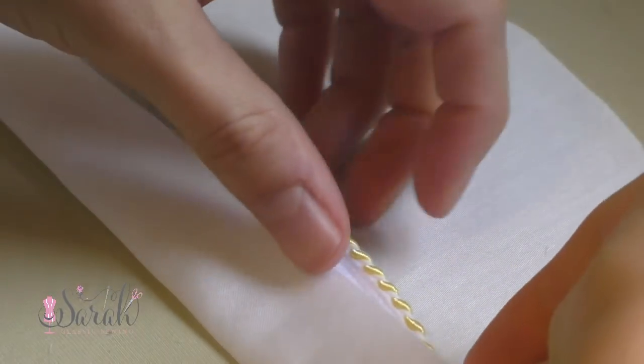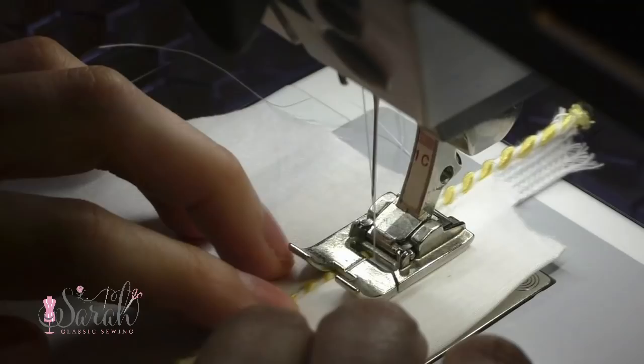Basically, I turn up the raw edge under 1/4 of an inch and then I turn it up until that folded edge is collinear to the notch in the sleeve. Then I'm sandwiching this piping into that fold that I've created and topstitching that down.